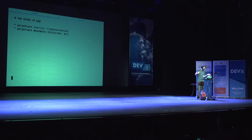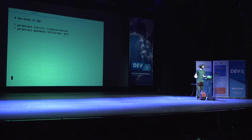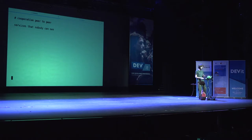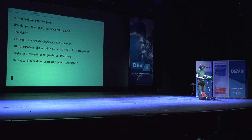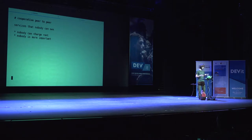There are two kinds of peer-to-peer. There are ones that perpetuate scarcity, like cryptocurrencies — as a currency maybe that's okay. But I prefer peer-to-peer systems that perpetuate abundance, like BitTorrent, where you can have as many copies of files as you want — this idea of the free exchange of information. Cooperative peer-to-peer systems are services that nobody owns, challenging the idea of private property on the web. How do you make money? Probably you don't really make money, but you can create abundance. You could get grants or build a community-based currency. I'm here to show you how to build these things.